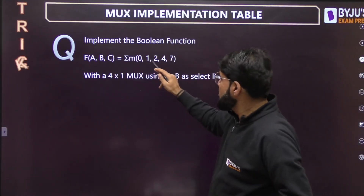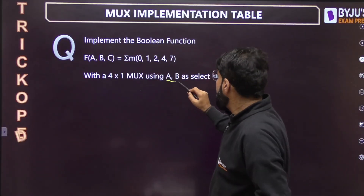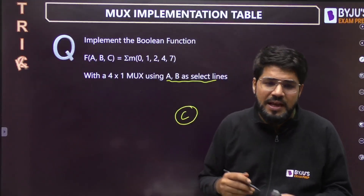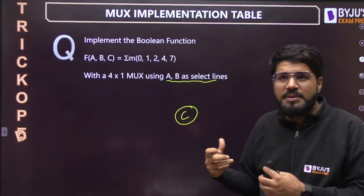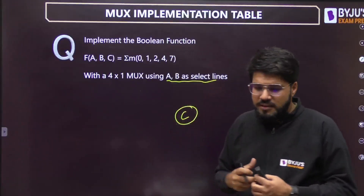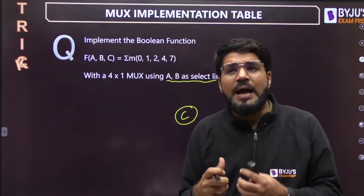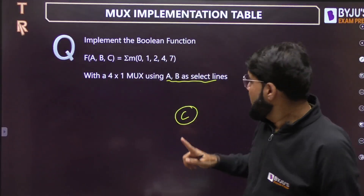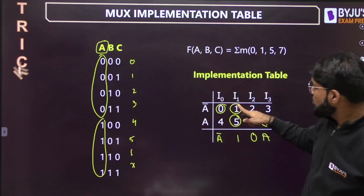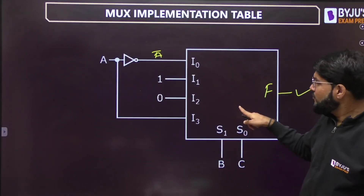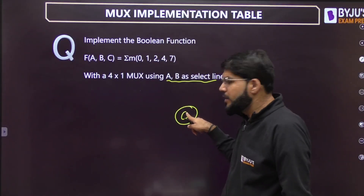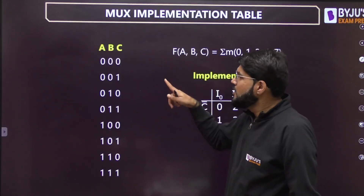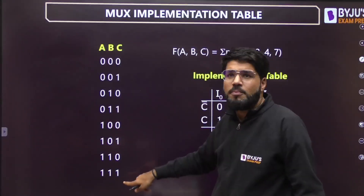Now let me change the select lines. A different function — m(0,1,2,4,7) — using A, B at the select lines, so C goes to the data input line. I am discussing this similar 3-variable, 4x1 MUX case because students have a habit of using the same implementation table as earlier. But now you have to make the implementation table according to C-bar and C.